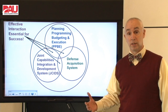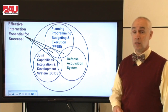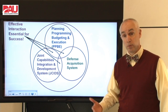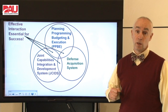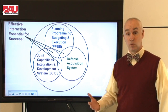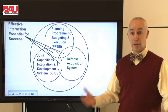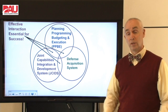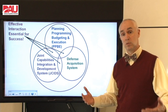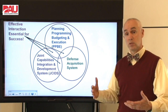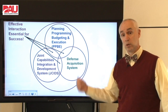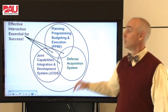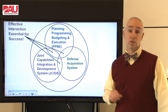Making these things work together is not easy because PPBE tends to be driven by the calendar — it's a once-a-year process to budget money for programs and program money in the out-years. The JCIDS system tends to be need-driven; needs are coming up all the time, so it has its own pace. Our Defense Acquisition System is an event-driven system — we want to get the data, testing, and design ready for our Milestone Decision Authority to have confidence in the next decision. So making something event-driven work with something need-driven and something calendar-driven tends to be a big challenge in acquisition.